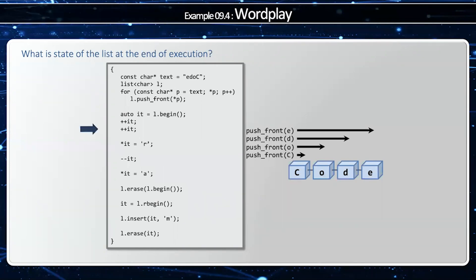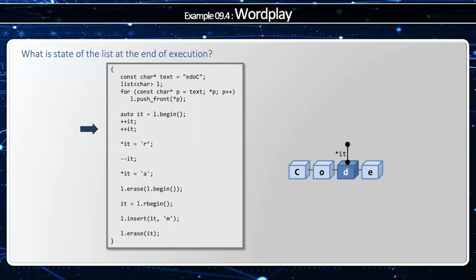Next I'm going to create an iterator which points to the first element in the list, then I'm going to advance it by two. So now it's not going to point to the C or the O, but rather it's going to point to the D.